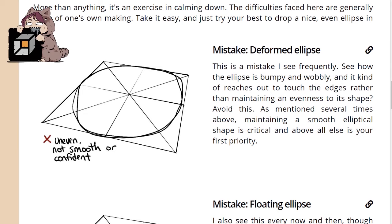Mistake: Deformed ellipse. This is a mistake I see frequently. See how the ellipse is bumpy and wobbly and it kind of reaches out to touch the edges rather than maintaining an evenness to its shape? Avoid this. As mentioned several times above, maintaining a smooth elliptical shape is critical and above all else is your first priority.